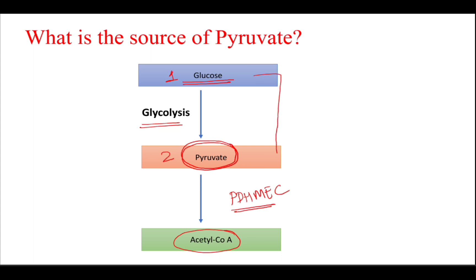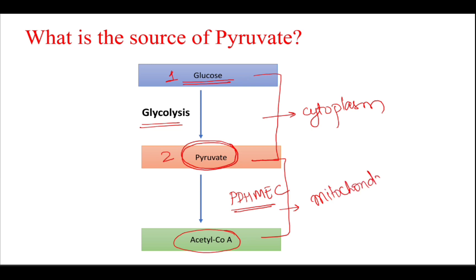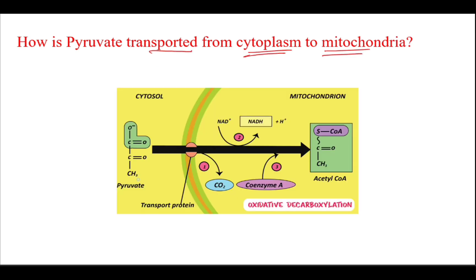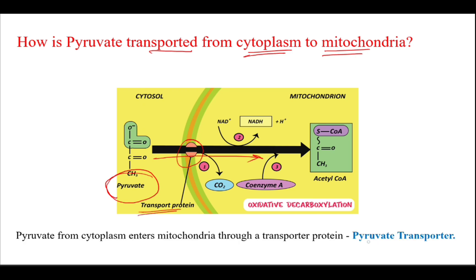The process of conversion of glucose to pyruvate occurs in the cytoplasm, whereas the process of conversion of pyruvate to acetyl-CoA occurs in the mitochondria. Pyruvate that is formed inside the cytoplasm is transported to mitochondria with the help of a protein called pyruvate transporter, a transport protein which helps in the transport of pyruvate from cytoplasm to the mitochondria.